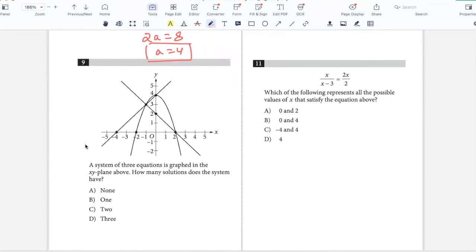A system of three equations is graphed in the XY plane above. How many solutions does the system have? The system will have a solution when all three equations intersect at a point. All three intersect at this point only. This is a common point of intersection for all three. The system has one solution only, option C.